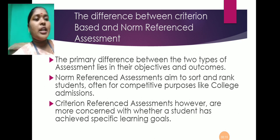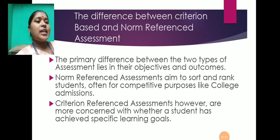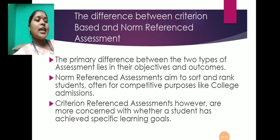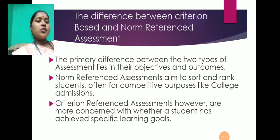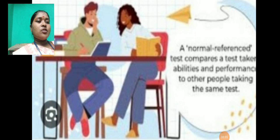The primary difference between the two types of assessment lies in their objectives and outcomes. Norm-Referenced assessments aim to sort and rank students for competitive purposes like college admission. Criterion-Referenced assessments are more concerned with whether a student has met specific learning goals.